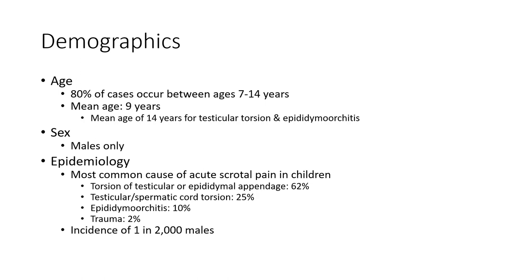Males only. Epidemiology: the most common cause of acute scrotal pain in children is torsion of testicular or epididymal appendix, around 62%. Testicular or spermatic cord torsion causes 25%, and epididymoorchitis accounts for another portion.